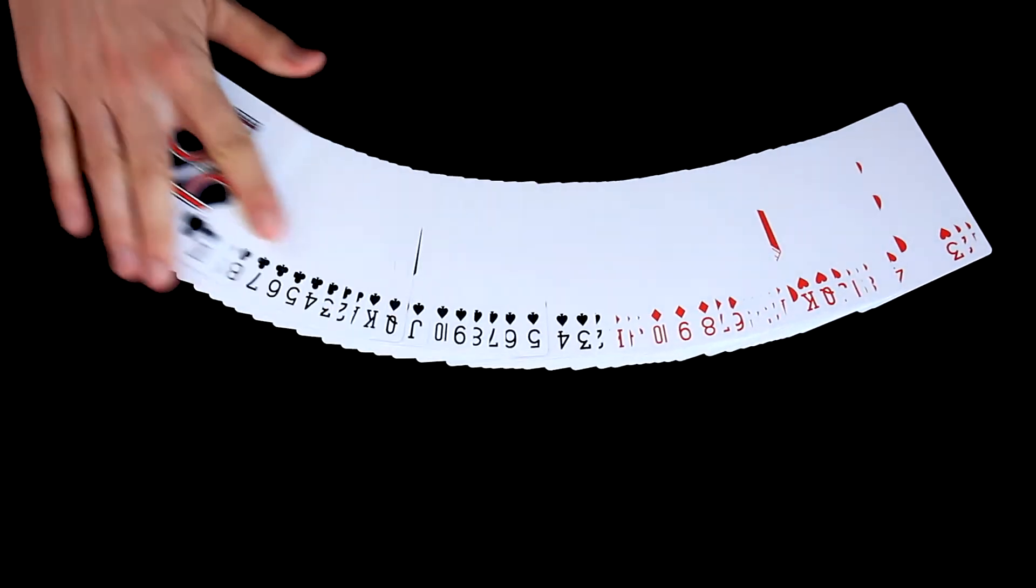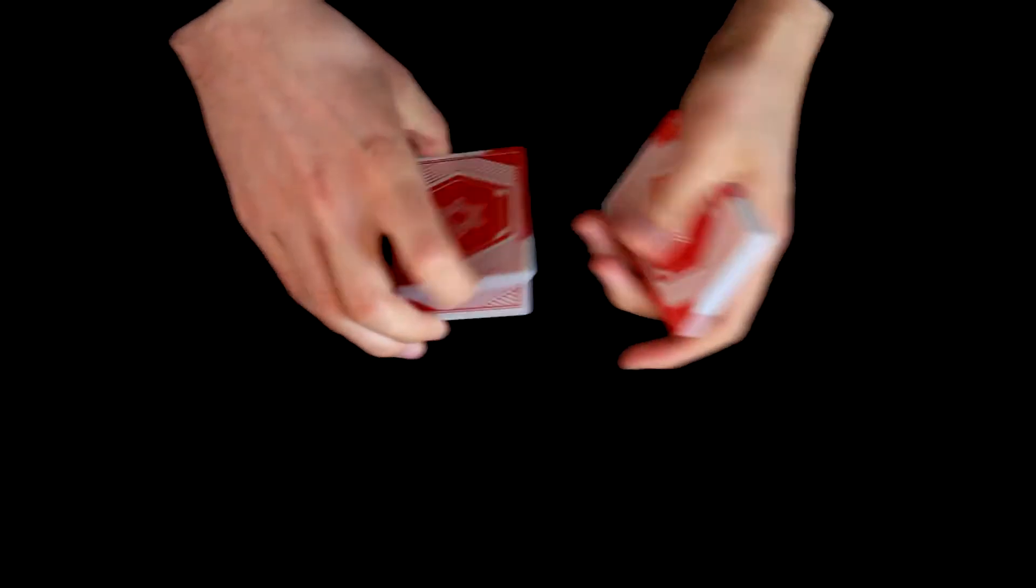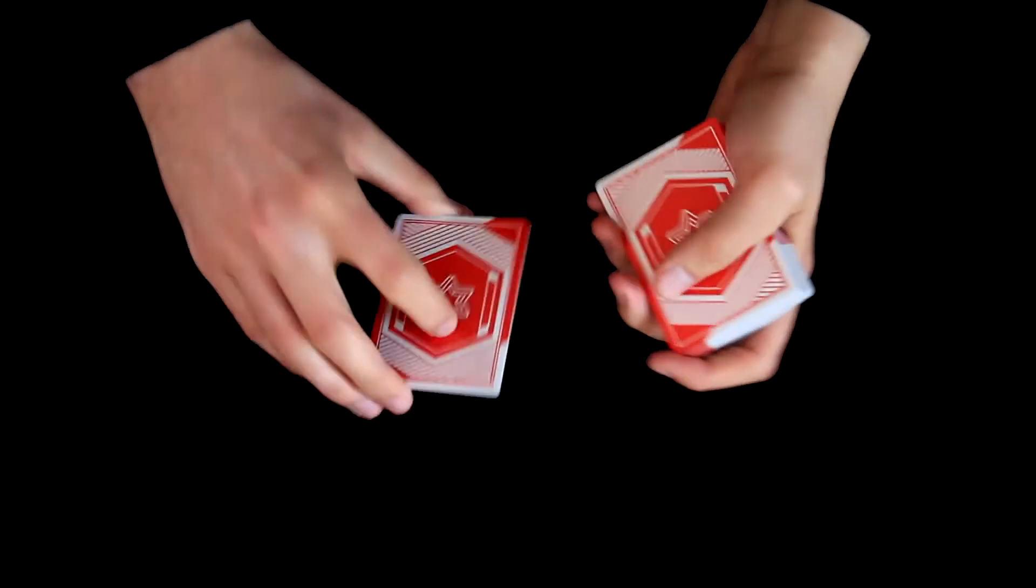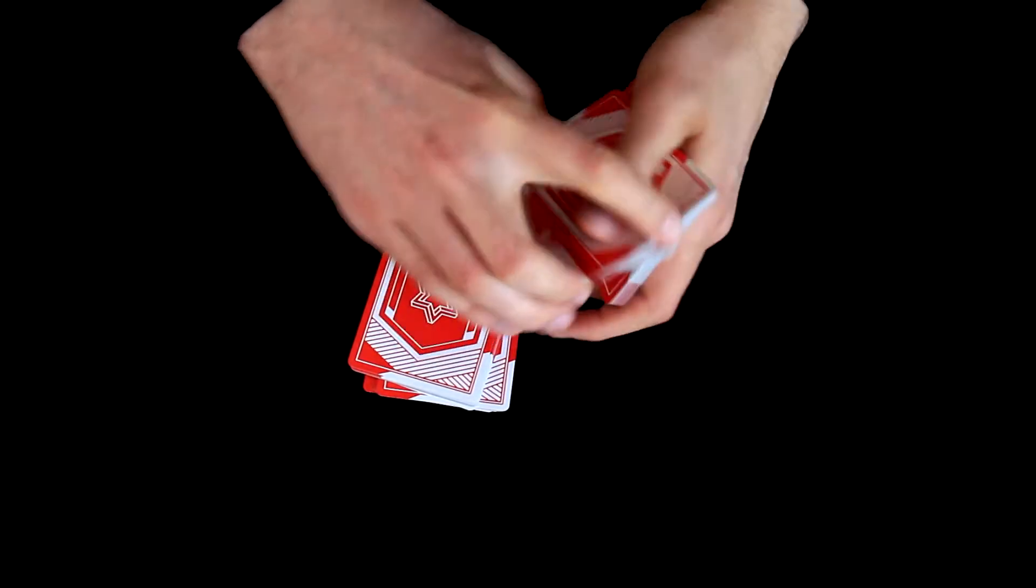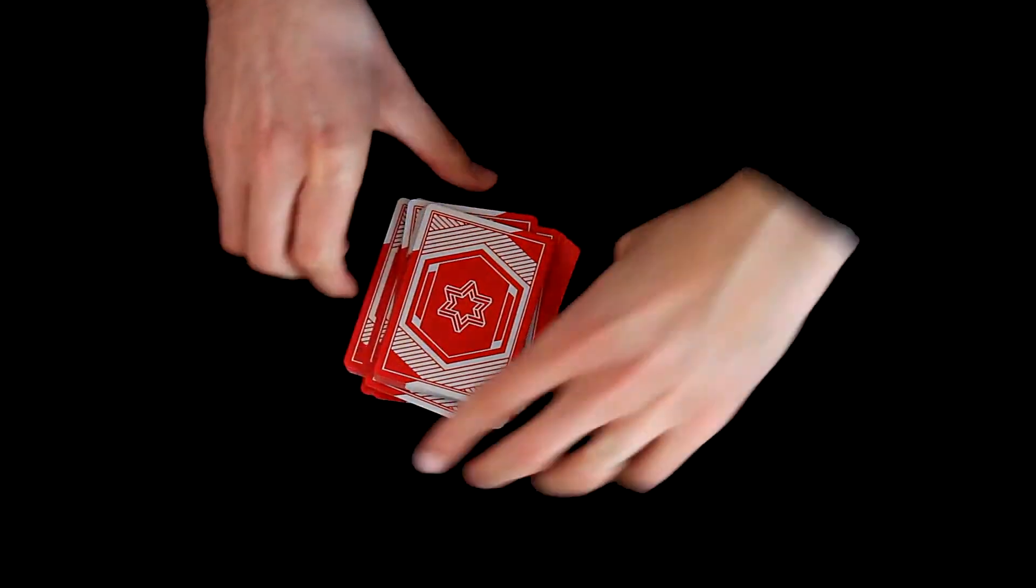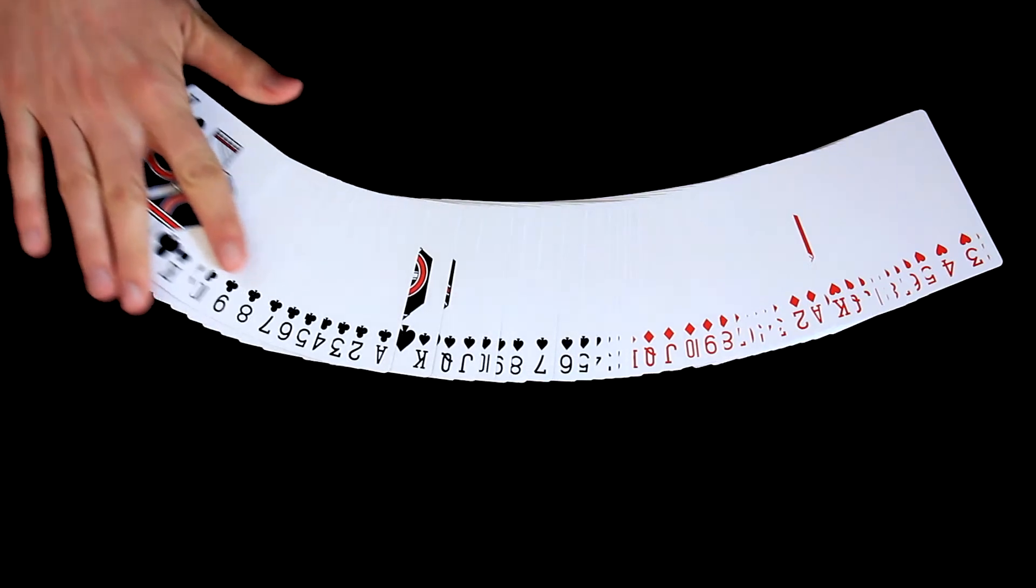Today we will learn a very easy false cut. We have a deck of cards that is in order, and the false cut can look like this or like this. And the deck is still in the same order.